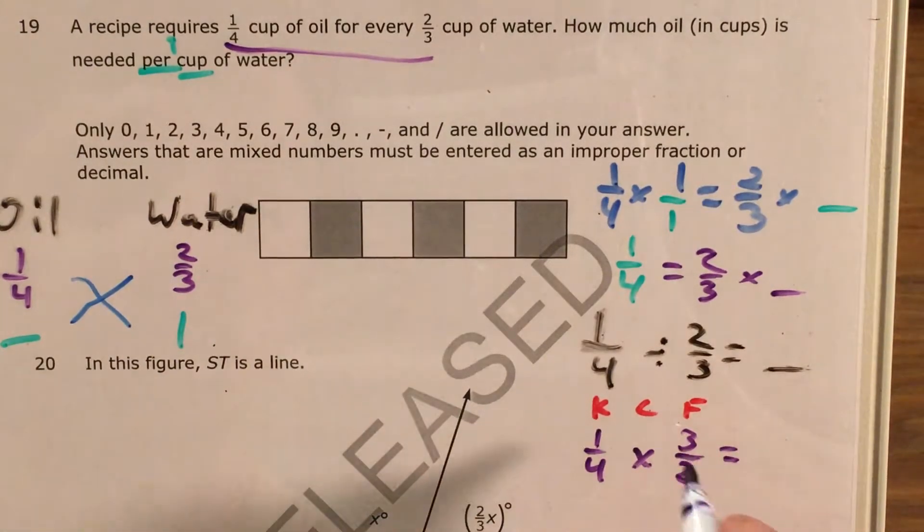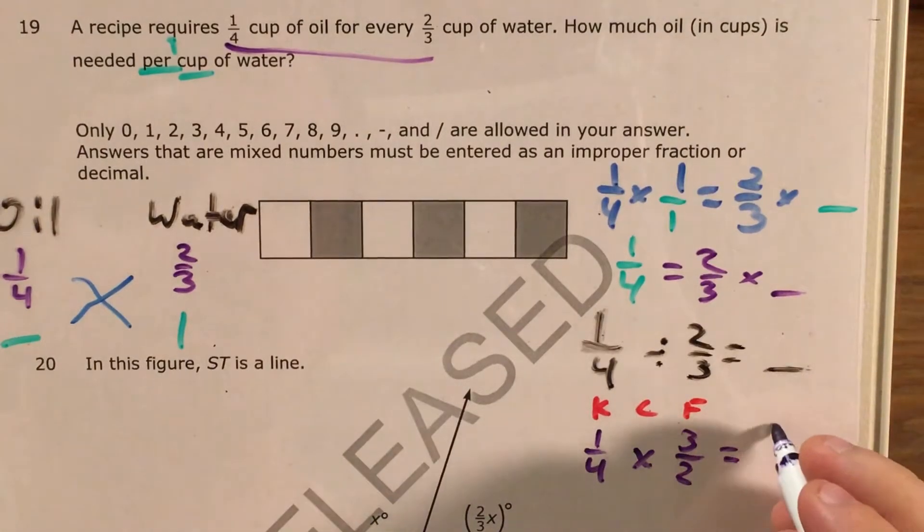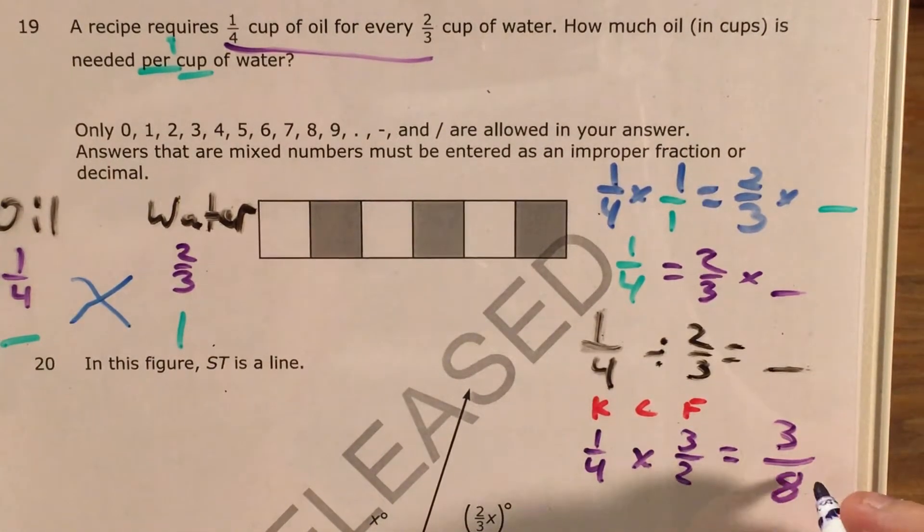And at this point, there's actually no simplifying I need to do. I just need to multiply numerators and denominators. One times three is three. Four times two is eight.